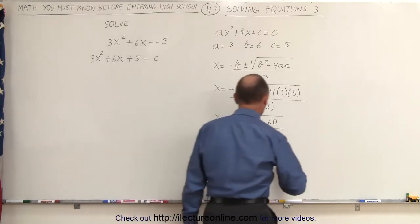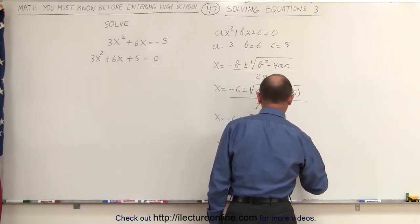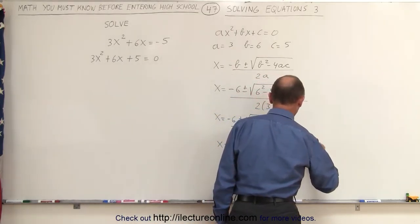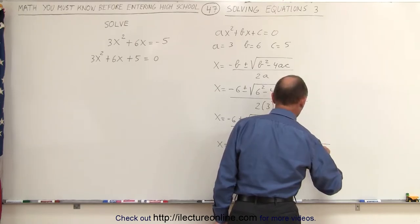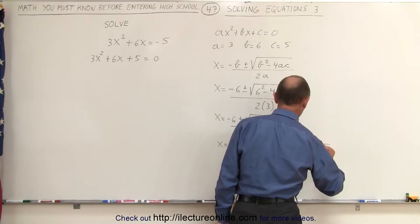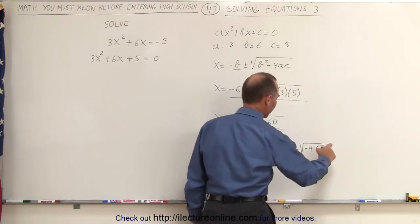Simplifying that a little bit more, we can say this is equal to -6, plus and minus the square root of, let's see here, how about 4 times 6? Yes, that's better.